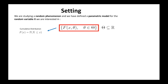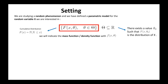The assumption we make is that the distribution of our random variable belongs to this set. It means that there exists a theta_0 such that f(x, theta_0) is the distribution of x. Keep in mind the role of this theta_0. f(x, theta) is the mass function or density function, depending on whether we are in the discrete or continuous case.